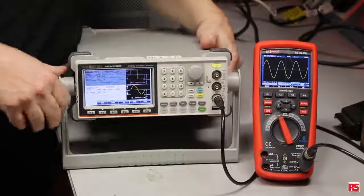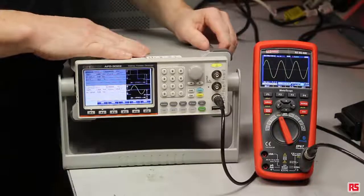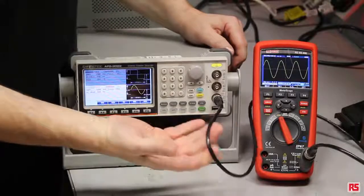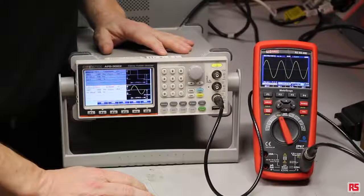So just to show you a little bit about the oscilloscope function of the meter scope HS608. What we've done is we've connected to a basic function generator, taken the lead into the oscilloscope port, selected obviously the oscilloscope function.